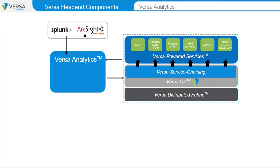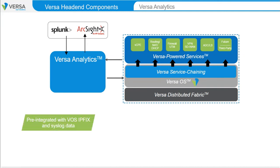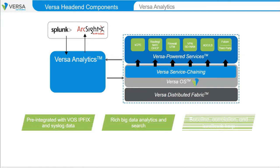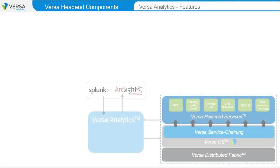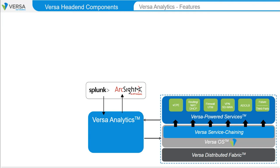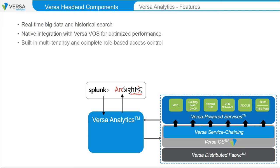Versa Analytics is a full-featured log collection and analysis platform. It provides a user-friendly and robust interface to view log files, track events and performance, and to forward log-related information to third-party log management systems. It is purpose-built for Versa Secure SD-WAN for use-case-focused analytics covering SD routing, SD-WAN, SD security, and SD branch. Versa Analytics is a rich, near-real-time big data solution that provides visibility and control, baselining, correlation, prediction, and a feedback loop into Versa software solutions.